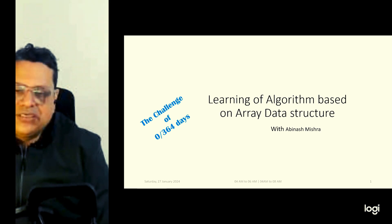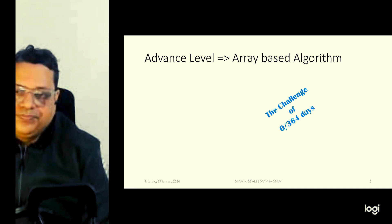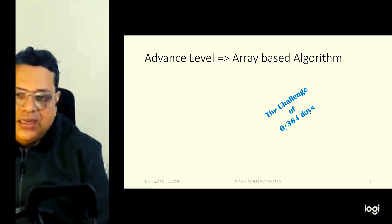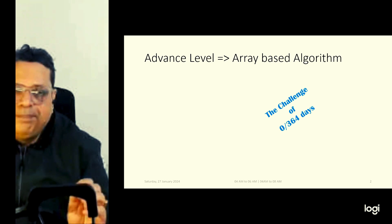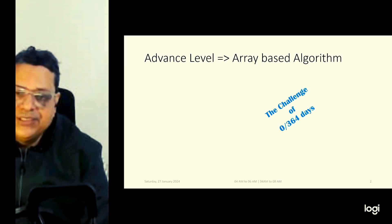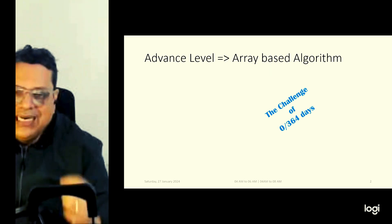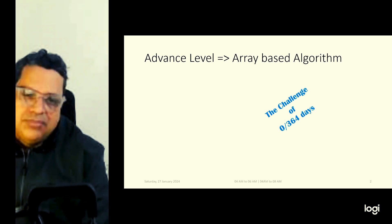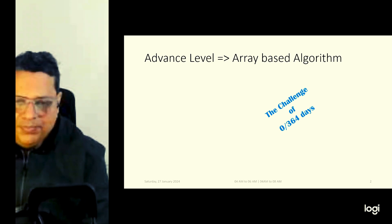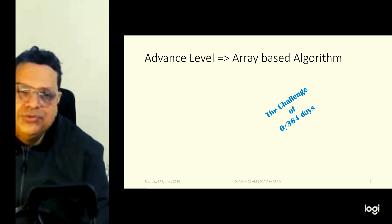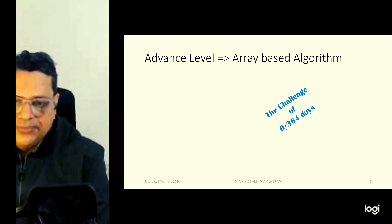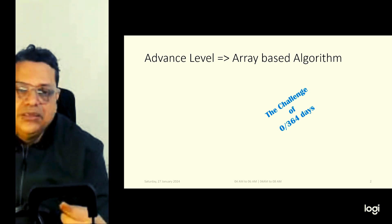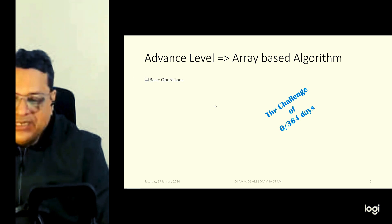Let's understand the different levels I have decided. The first is called the Advanced Level, and under it I plan to cover six different types of algorithms based on array data structure. The first is basic operations of linear and binary search — like insertion, deletion, traversal, and searching. The second segment is sorting algorithms, covering bubble sort, insertion sort, and selection sort. The third key algorithm is the two-pointer algorithm.